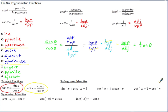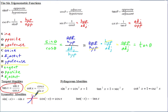Then the symmetry identities — these are based on the graph, which ones are odd and which ones are even. If you plug in negative x for sine, it equals the opposite of sine, because the graph of sine is an odd function. So when you plug in the opposite x-coordinate, you get a y-coordinate that's the opposite.